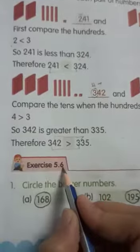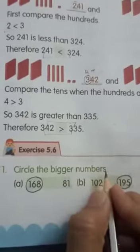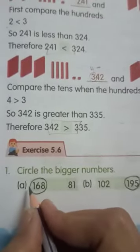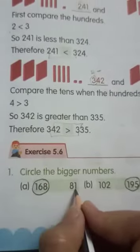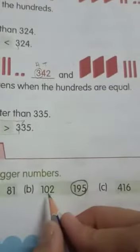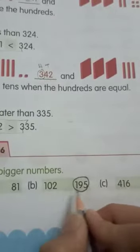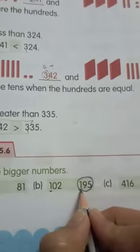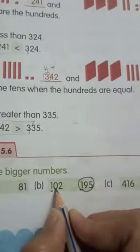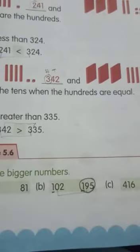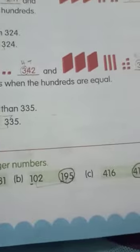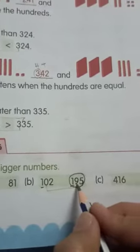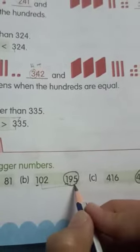Exercise 5.6: Circle the bigger numbers. This is a 2-digit number and this is a 3-digit number, so obviously the 3-digit number is bigger. Next, both numbers are 2 digits and we have the same digit on the hundreds place, so we compare the tens place. We have 0 and 9 on the tens place, and 0 is less than 9, so 195 is the bigger one.